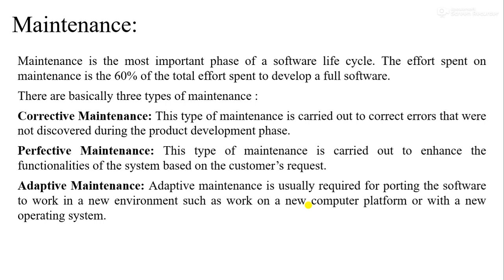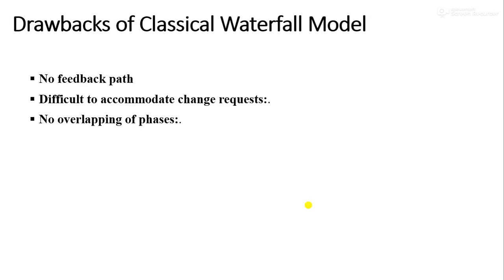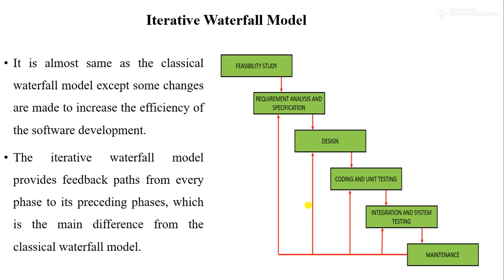Now we are going to learn the drawbacks of the classical waterfall model. This model has mainly three drawbacks: first, no feedback path; second, difficult to accommodate changes; and third, no overlapping phases. No feedback path means we cannot rectify errors made in previous phases. Difficult to accommodate changes follows from this. No overlapping phases means we cannot perform two or more activities simultaneously, because this is a sequential model.